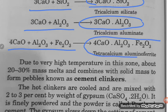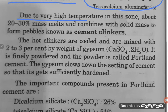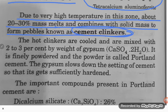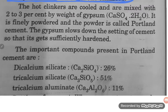Due to the very high temperature in this zone, about 20 to 30 percent of the mass melts and combines with the solid mass to form pebbles known as cement clinkers. The hard clinkers are then cooled.